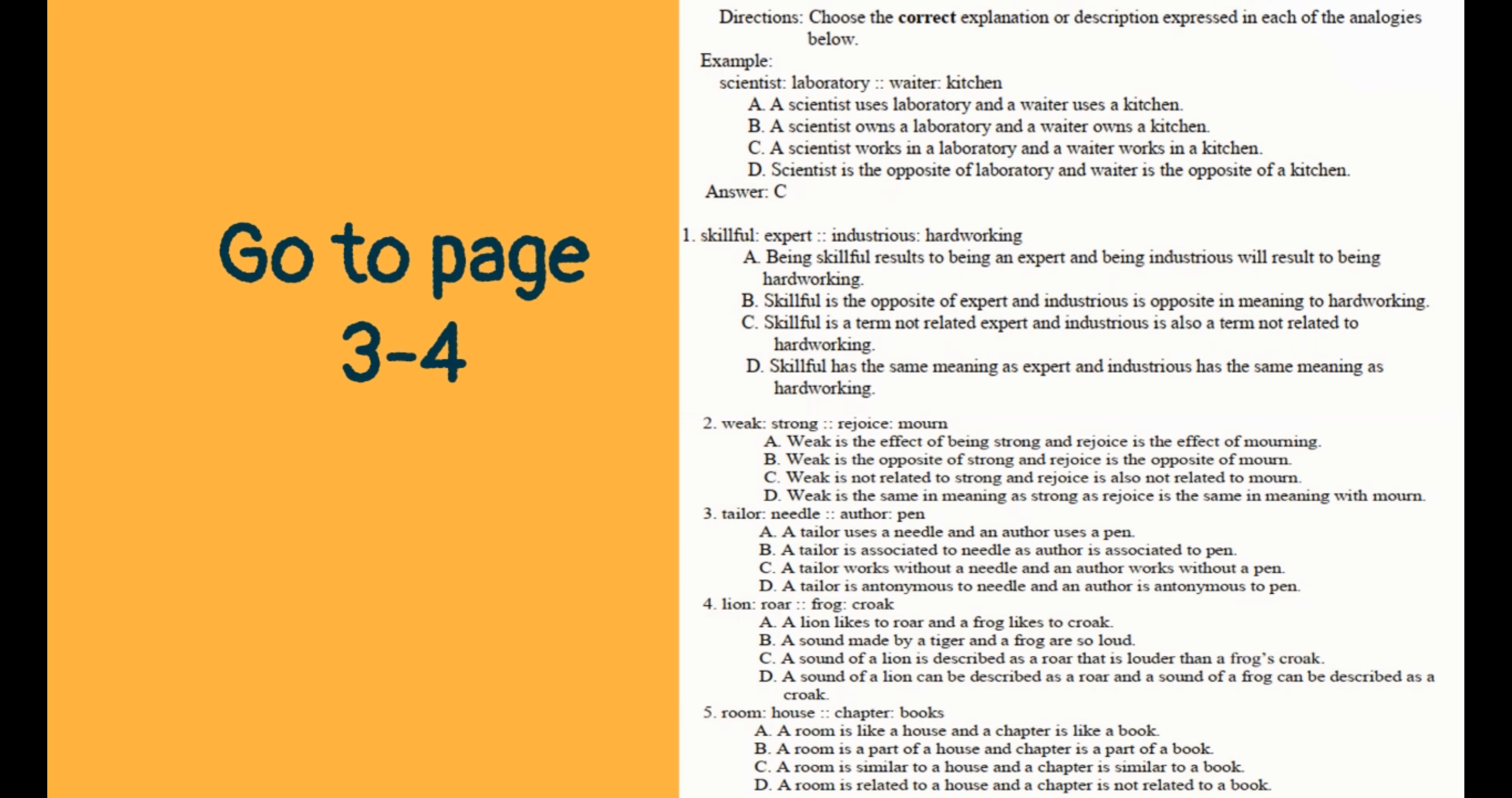Go to page three to four. Choose the correct explanation or description expressed in the analogy below. Example: a scientist is to laboratory as waiter is to kitchen. A: scientist uses laboratory as waiter uses kitchen. B: scientist owns a laboratory as waiter owns kitchen. C: scientist works in laboratory as waiter works in kitchen. D: scientist is the opposite of laboratory as waiter is the opposite of kitchen. The correct answer is number C. Are you ready to answer the rest? Let's go!